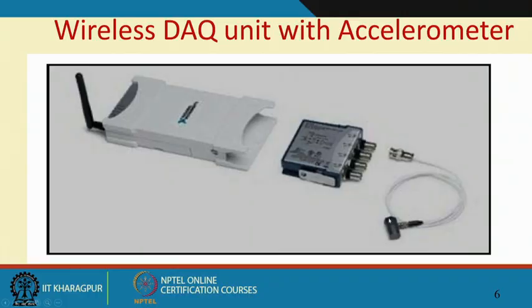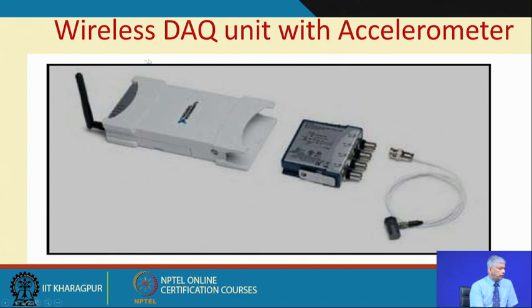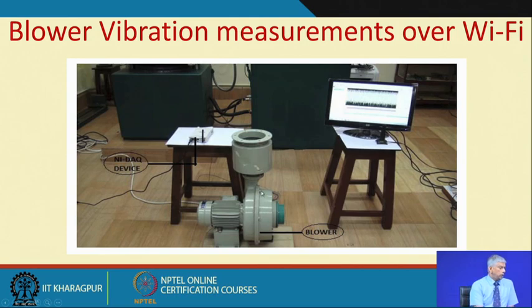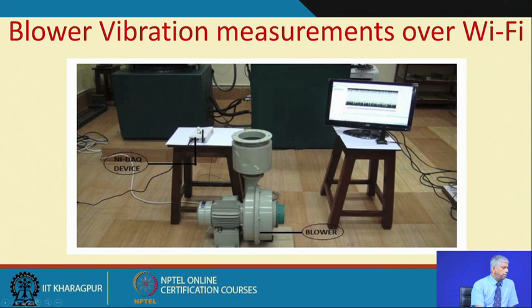We demonstrated this in the laboratory. The data acquisition unit has an accelerometer used to measure vibration — it connects at the machine end through a cable, but the entire unit is kept at the machine and there is a Wi-Fi transmitter which transmits the signal. In the laboratory we have a blower — actually a three-phase motor — with an accelerometer mounted on it and the Wi-Fi device attached. All the cables go in, the blower was run at a certain speed, data was acquired and transmitted. Another laptop with the Wi-Fi receiver received the signal and we can see the time domain signal.